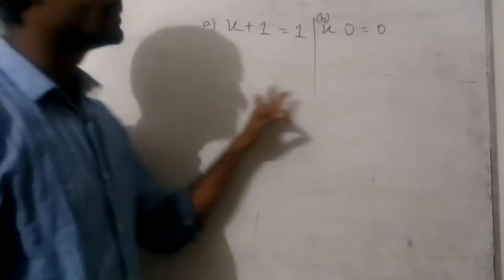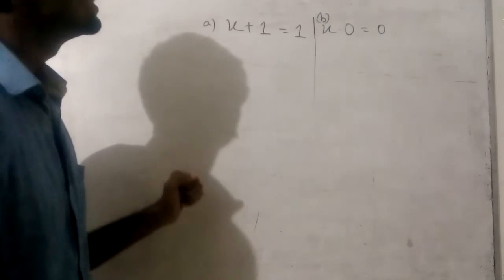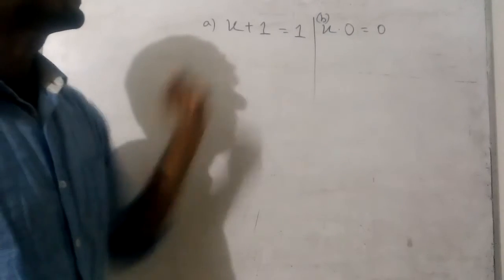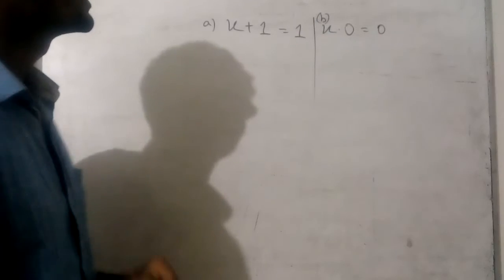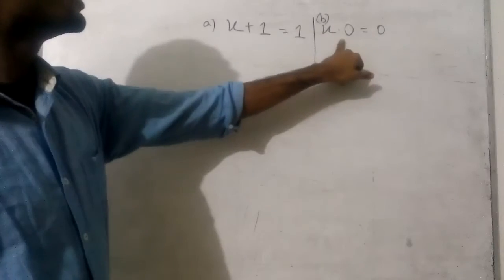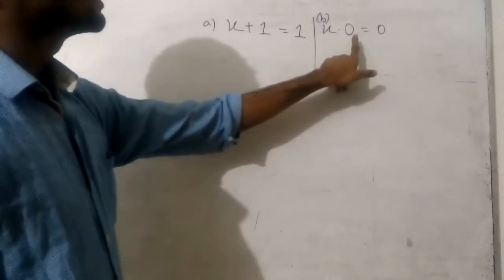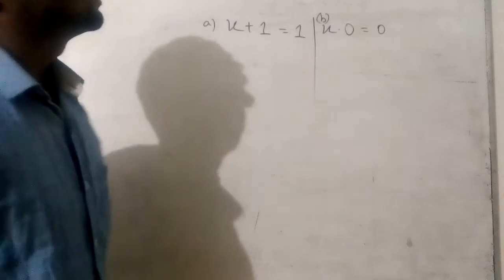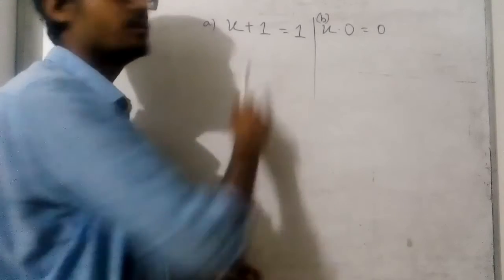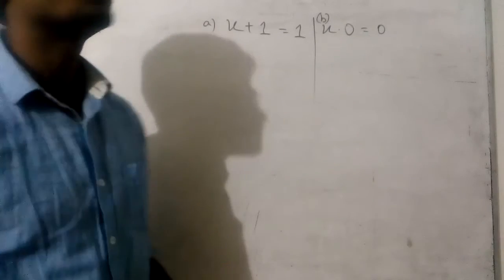Now we are going to solve this equation. The first equation is x plus 1 equal to 1, and the second equation is x into 0 equal to 0. We got these from here by applying the principle of duality.